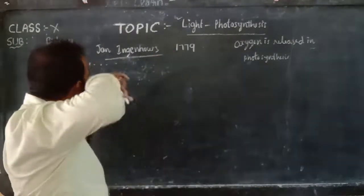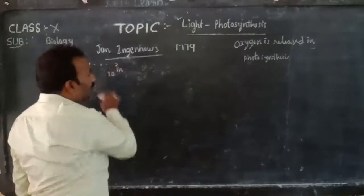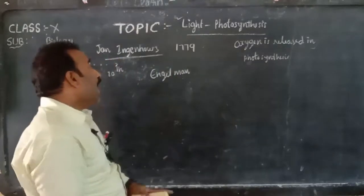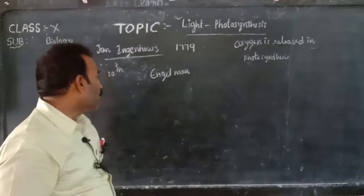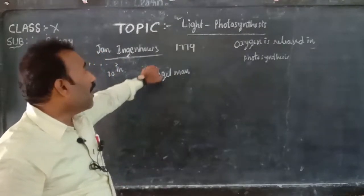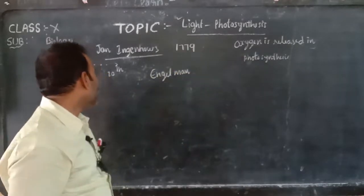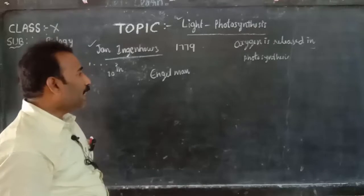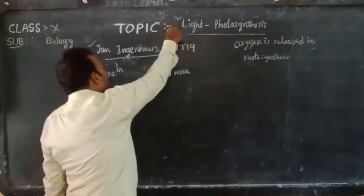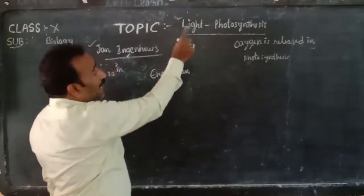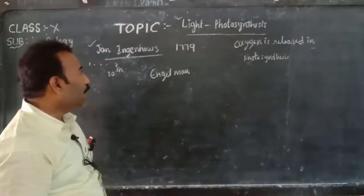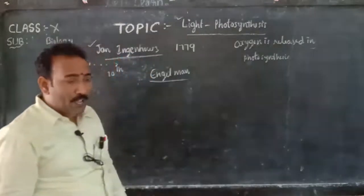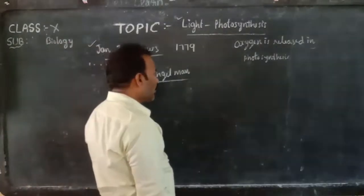At the beginning of the 20th century, Engelman further confirmed that oxygen is released during the process of photosynthesis. Engelman also conducted an experiment to determine which light is more suitable for photosynthesis.